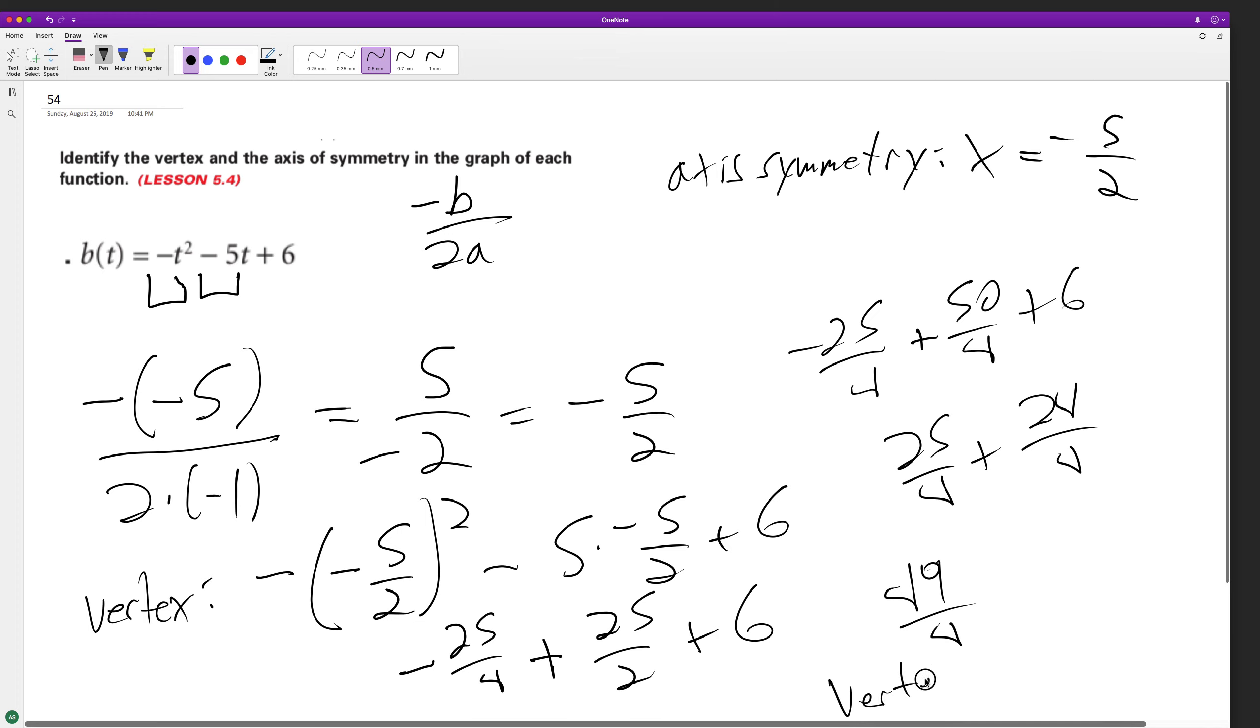So our vertex is at negative 5 halves and 49 over 4, and I can show the equation right here.